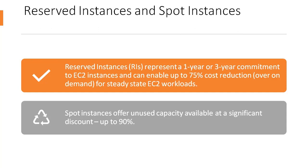A final alternative is on-demand. For workloads that are not running in perpetuity, on-demand is ideal. Workloads can be deployed, used for as long as required, and then terminated. By leveraging simple automation such as AWS Lambda and CloudWatch alarms, you can schedule workloads to start and stop at the open and close of business or at other meaningful intervals. For workloads that are not 24/7 steady state, this can provide greater cost effectiveness compared to RIs and more certainty and ease of use compared to spot.